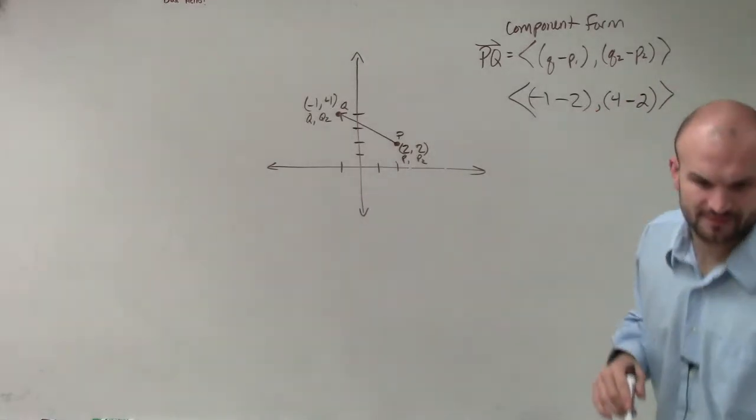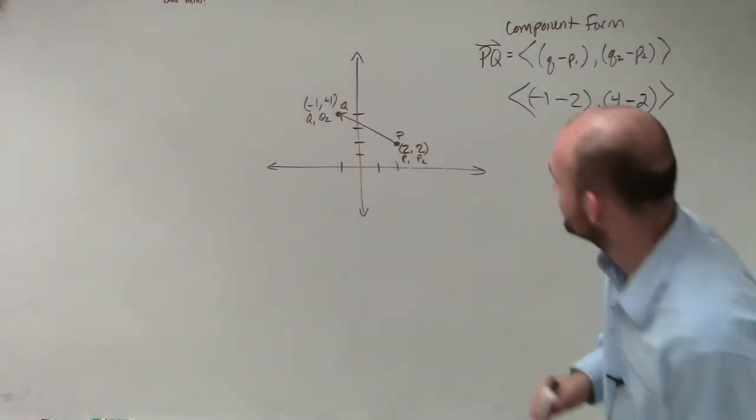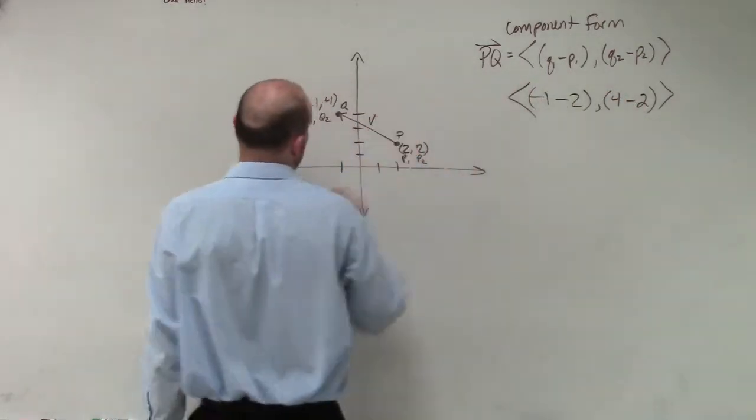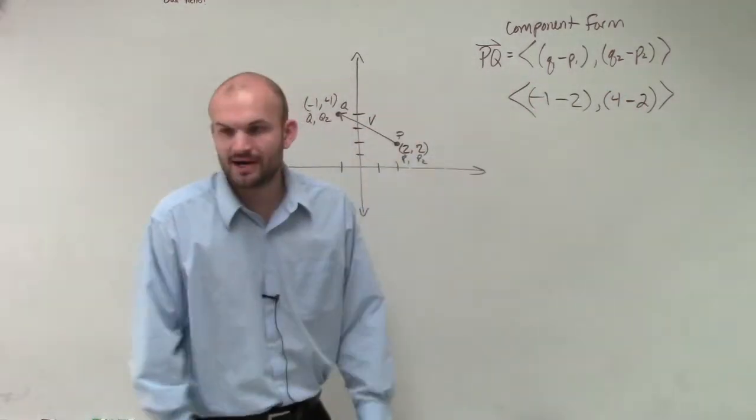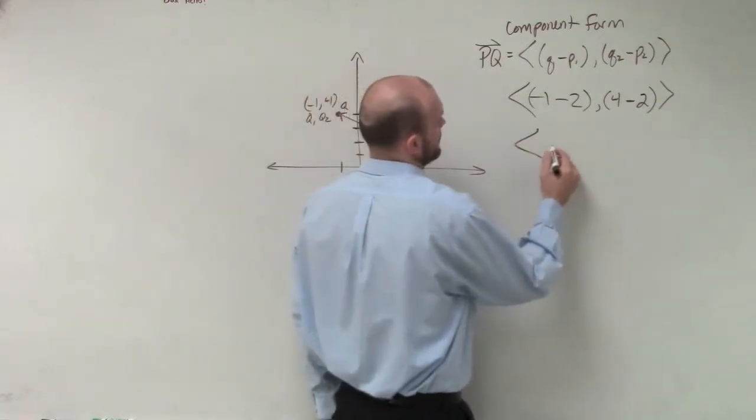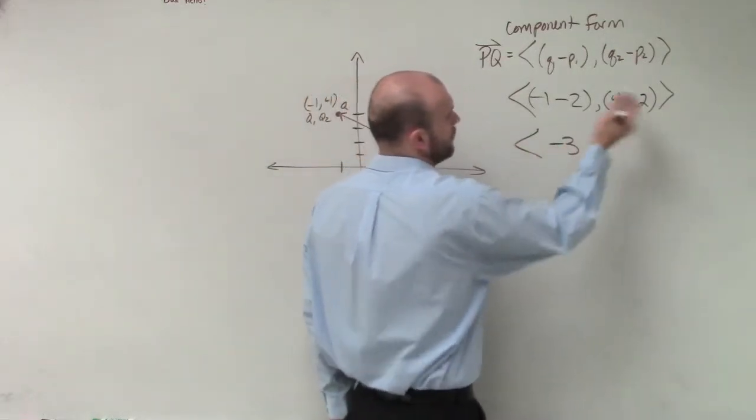Therefore, we're going to have negative 1... Did they give this a name? Yes, they did call it V. OK, so we have vector V. So we have negative 1 minus 2, which is negative 3. 4 minus 2 is 2.